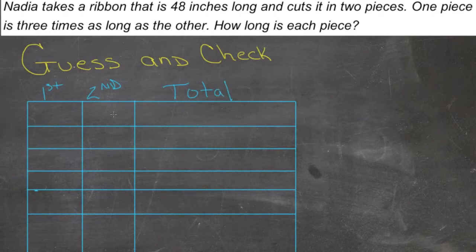What we need are two numbers, this one three times as big as this one, that add up to be 48. So let's just pick a number. Let's say the first one was six inches long. If the first one was six inches, then this one would be three times six, or 18. Six plus 18 is 24.